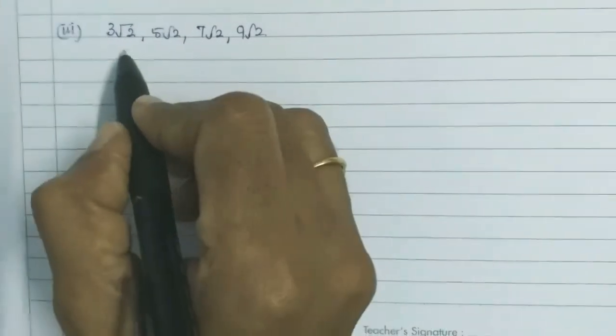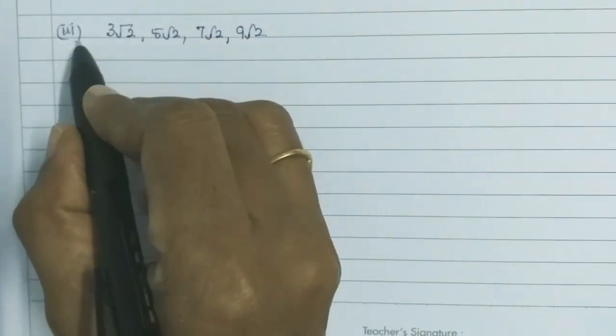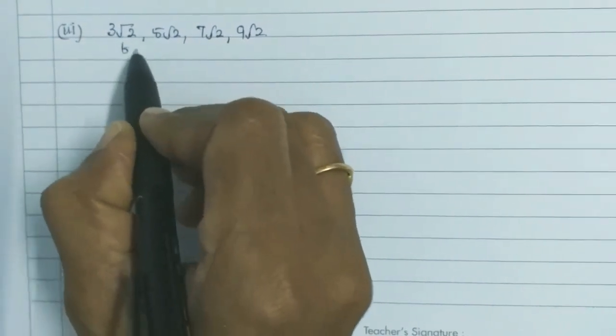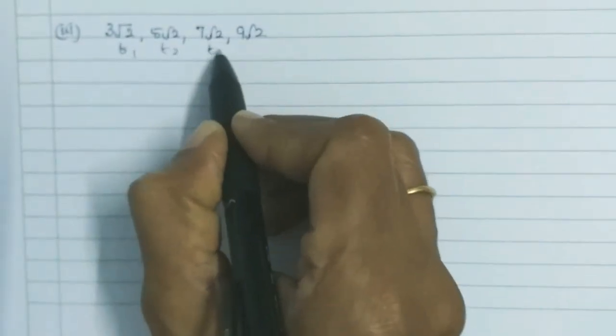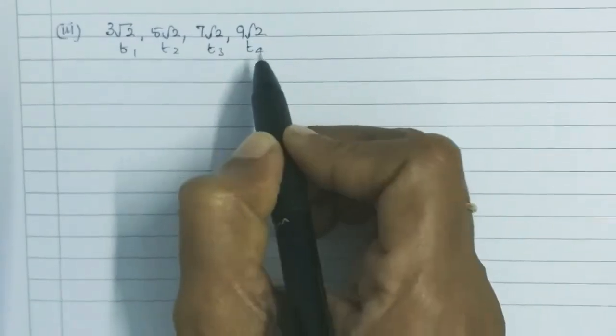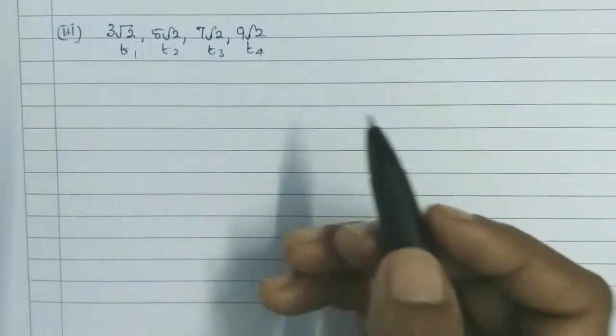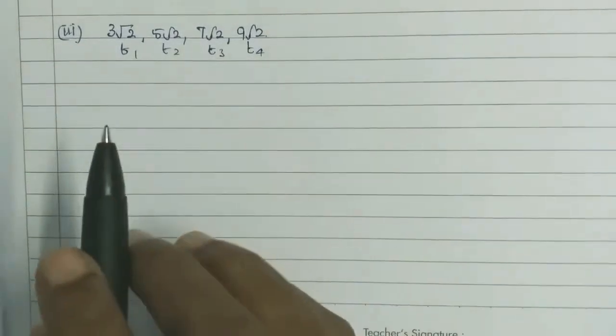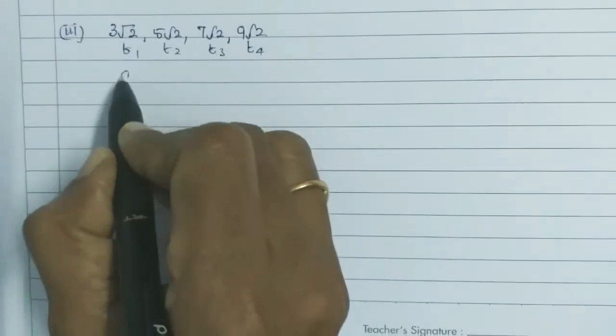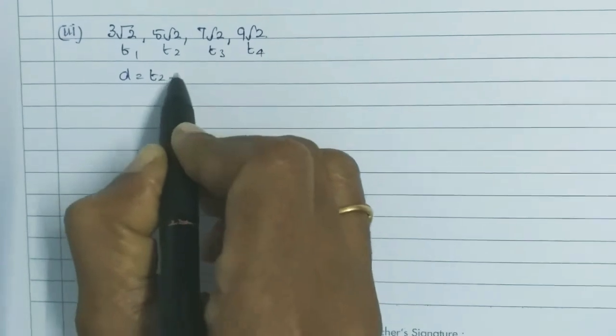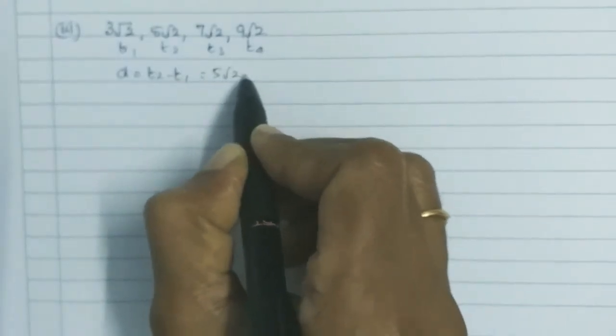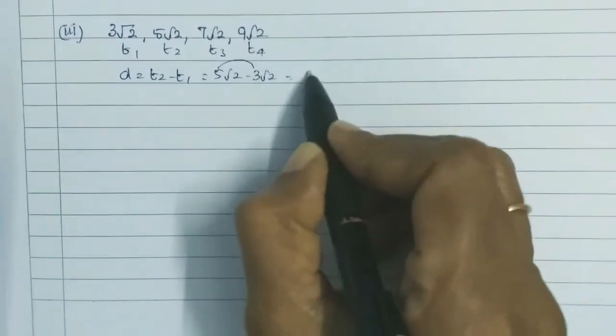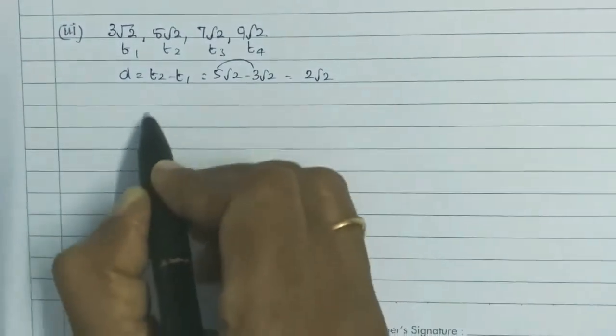Now for the third subdivision, we have 4 elements: T1, T2, T3, T4. At least we need to check 2 differences. So D equals T2 minus T1, that is 5√2 minus 3√2. 5 minus 3 is 2, so 2√2.